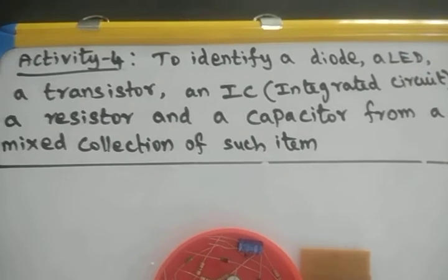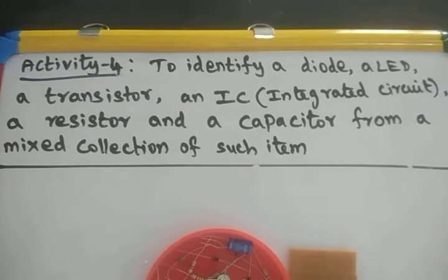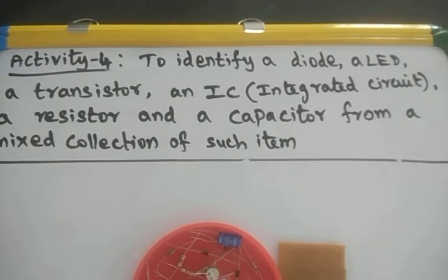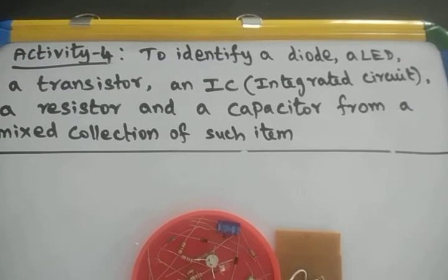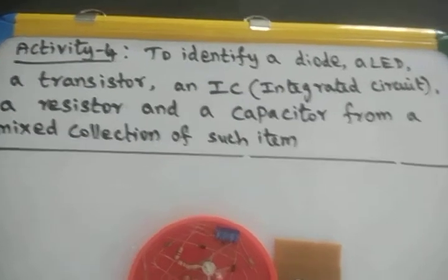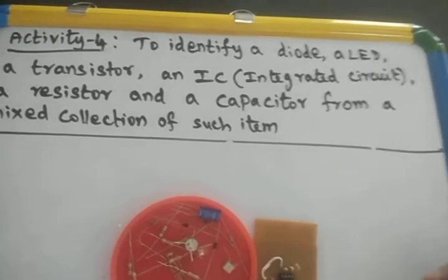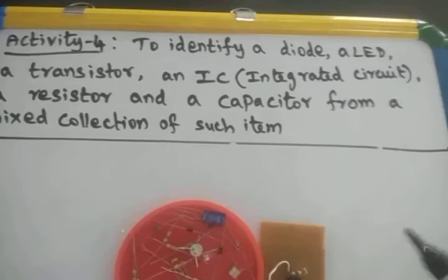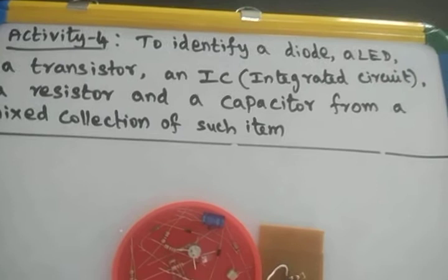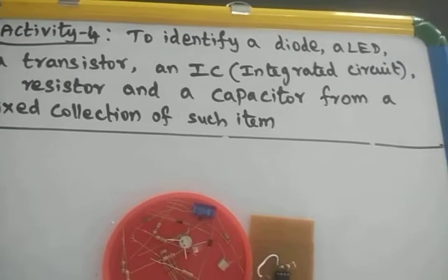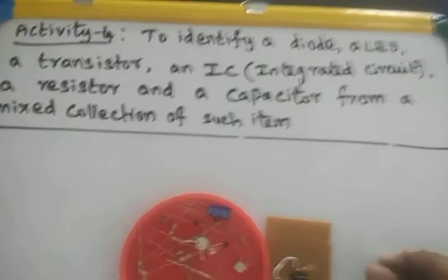Activity 4: To identify a diode, LED, a resistor, an IC (integrated circuit), and a capacitor from a mixed collection of such items. These are all the different electrical components used in any given domestic circuit. In this activity, the teacher will provide a mixture of all the components, and the student has to identify: this is a resistor, this is a transistor, this is an LED, and so on. So first we will see them one by one.